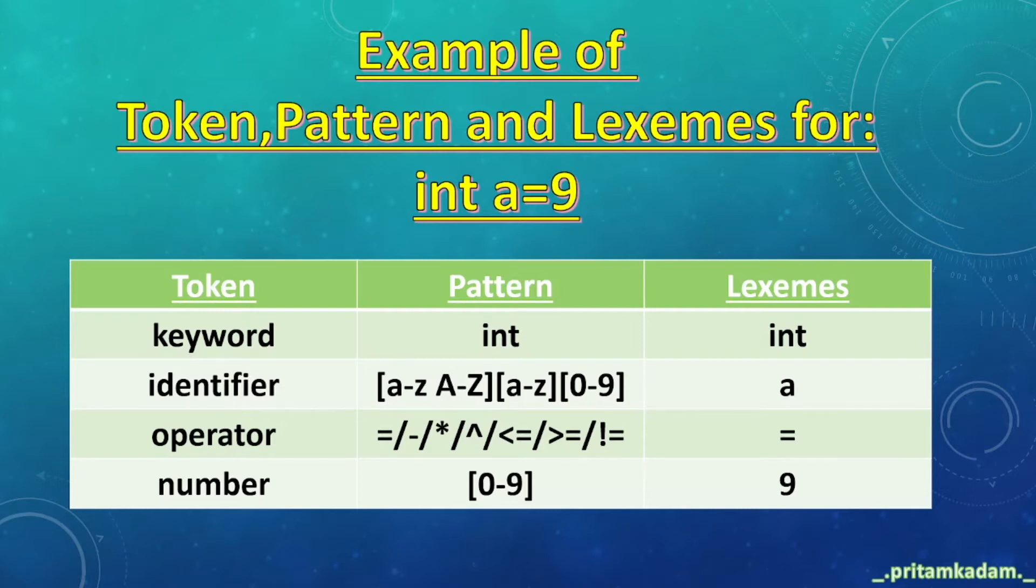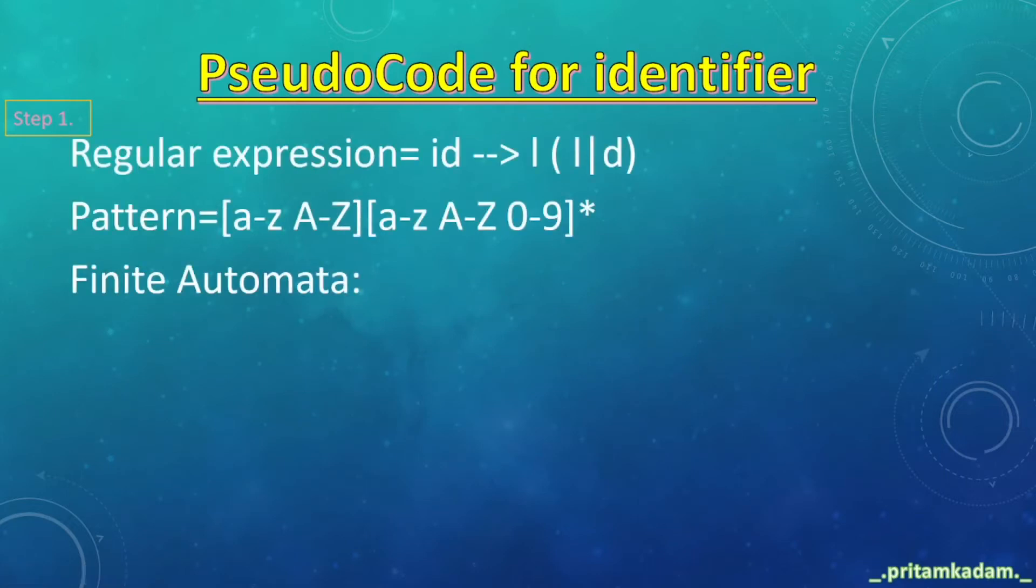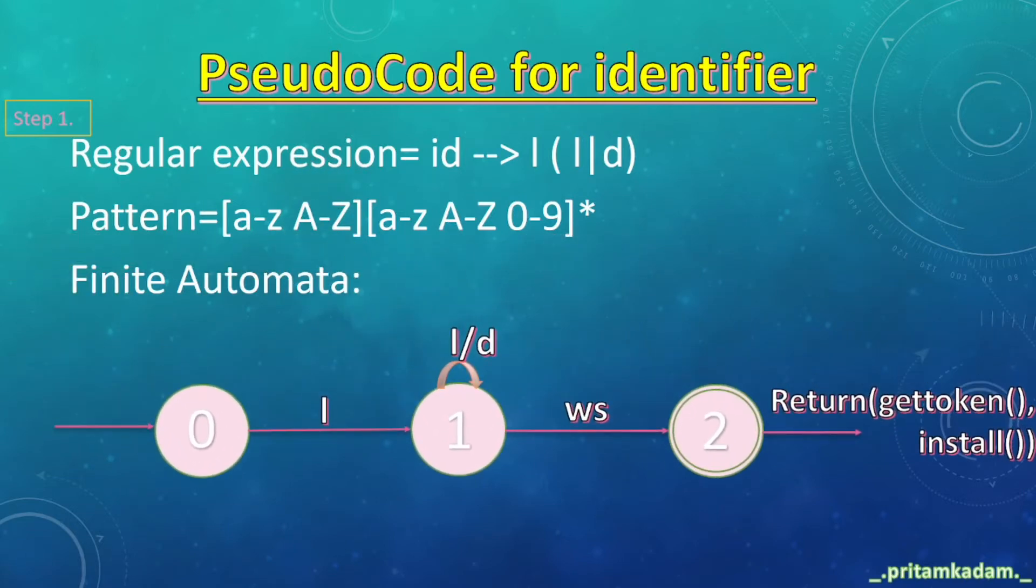Now how to write pseudocode for identifiers. Step 1: we have to form the regular expression for it. So id first will be i and then another will be d or i. Pattern will be first starting with characters small or capital and then it may contain digits also.